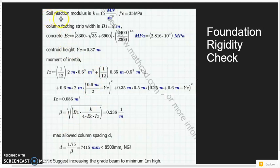K equals 15 MPa. Column footing grade beam width is 2 meters. Then we can calculate the moment of inertia of this whole footing by the section. We can see the section moment of inertia is 0.086 m⁴. So we get β equals 0.236 reverse meter.